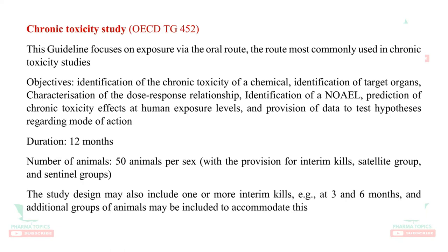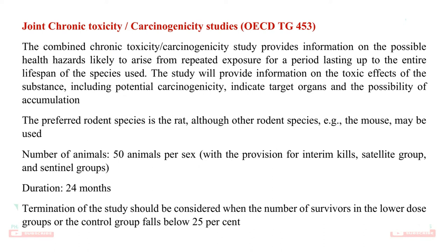Chronic toxicity guideline 452 is the same design but administered for greater than three months — around 6 to 12 months, usually one year. There is an additional sentinel group; the number of animals is 50 per gender, with provision for interim kills. The study design may include one or more interim kills — some animals killed at the third month, some at the sixth month — with additional groups included to accommodate this. Carcinogenicity studies may be combined with chronic toxicity studies; the duration is 24 months with 50 animals per gender, guideline 453.